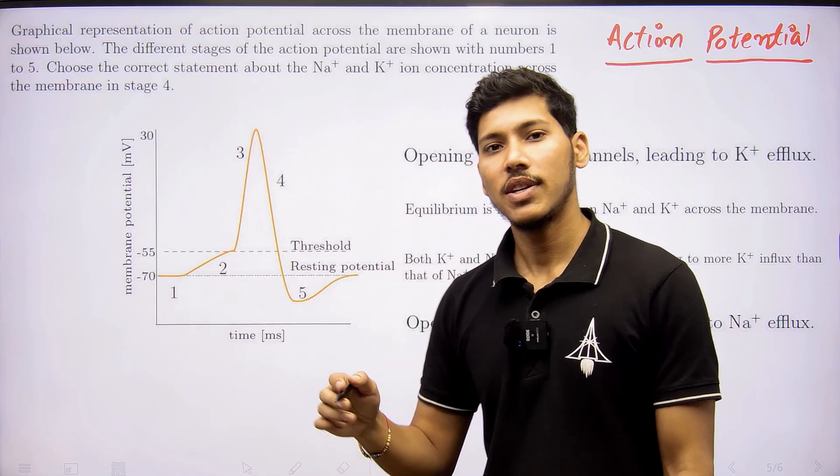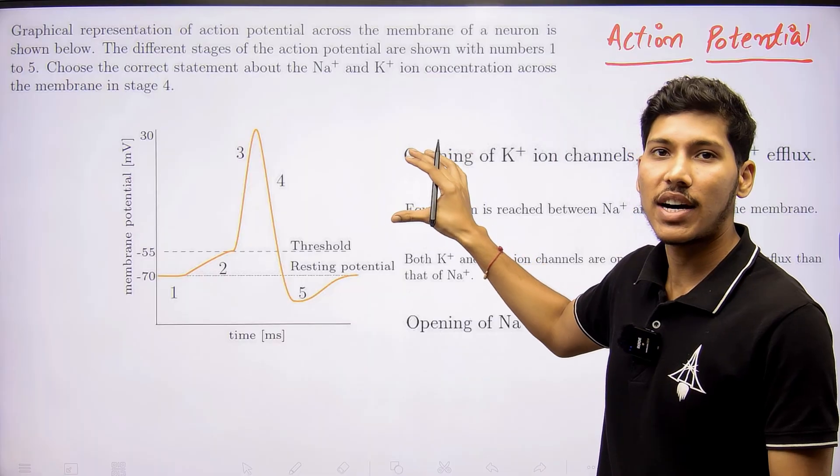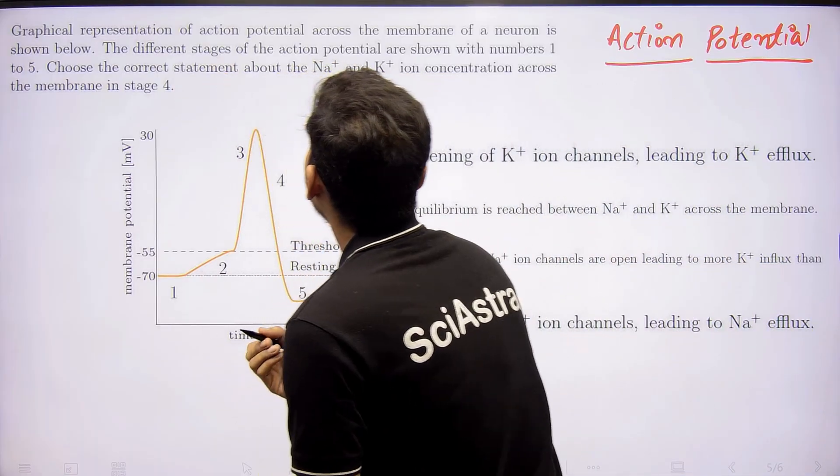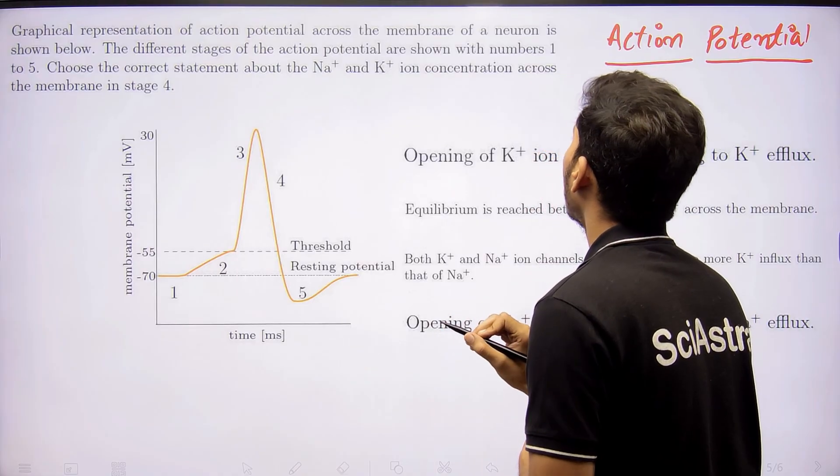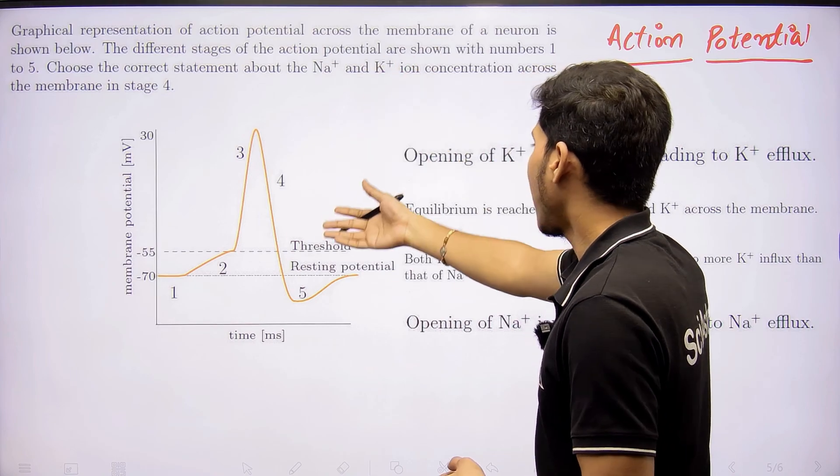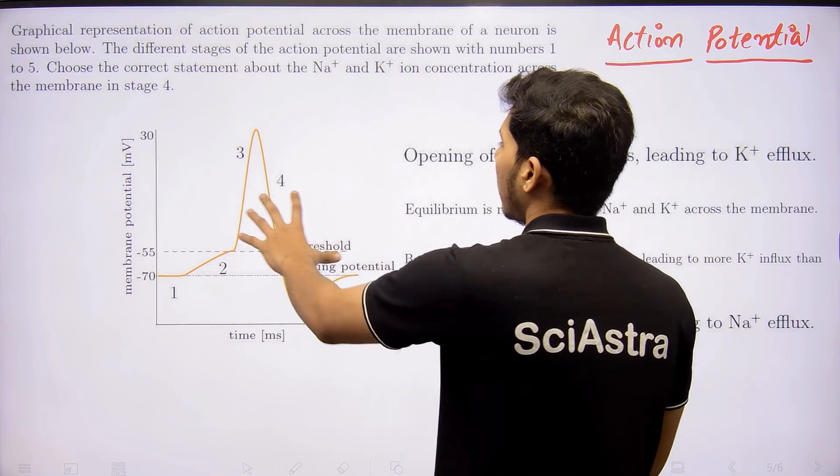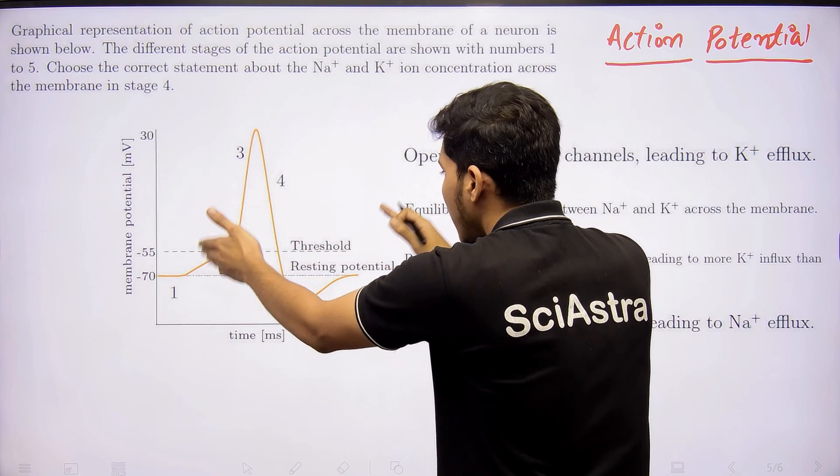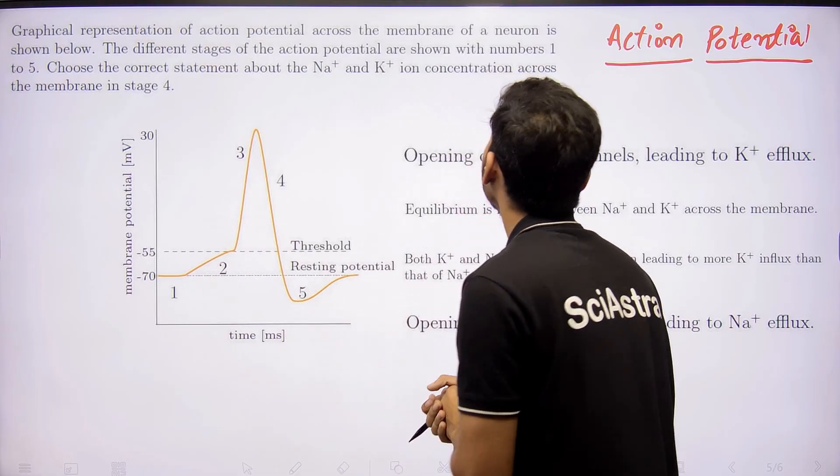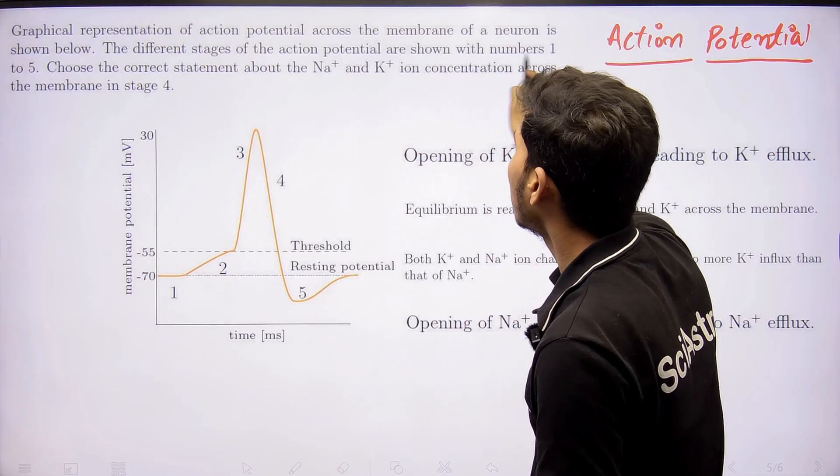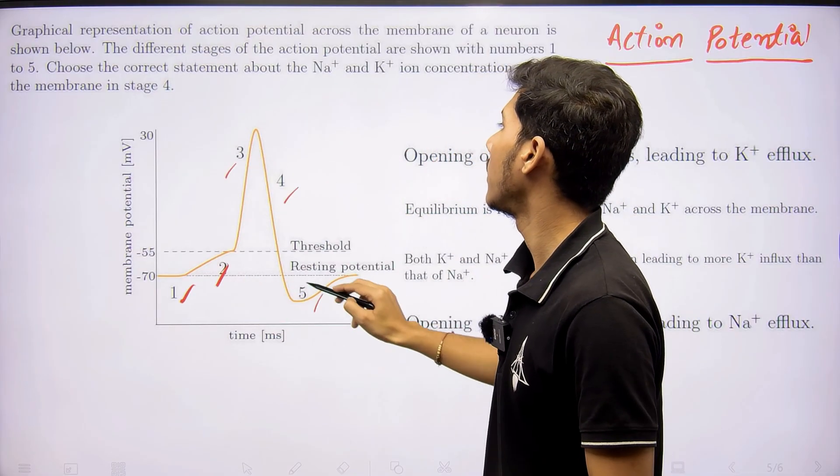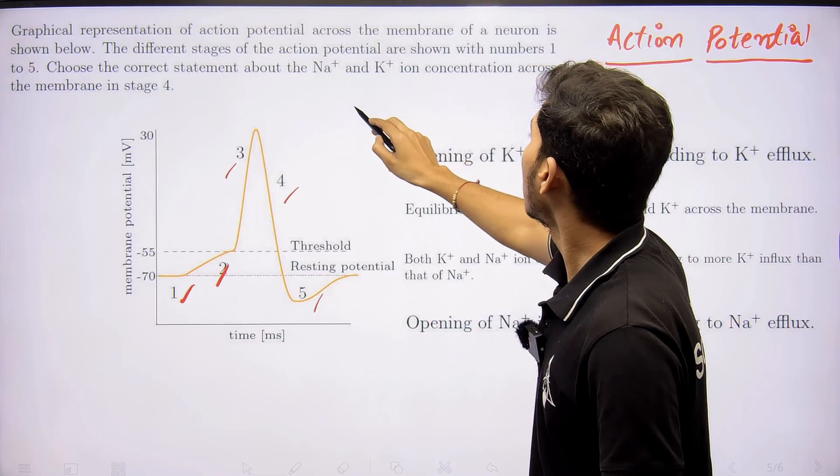Let's see: graphical representation of an action potential across the membrane of a neuron is shown below. They are basically telling that they have given this graph here with information about action potential generation. The different stages of action potential are shown with numbers 1, 2, 3, 4, 5. Choose the correct statement about the sodium and potassium ion concentration across the membrane in stage 4.